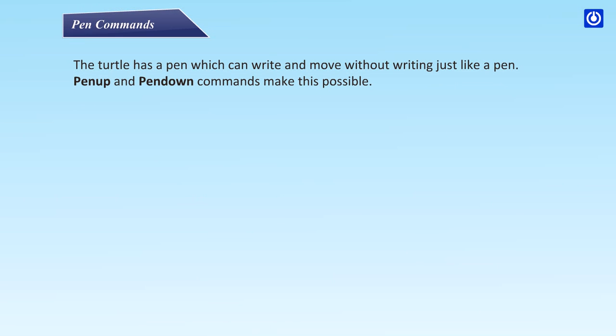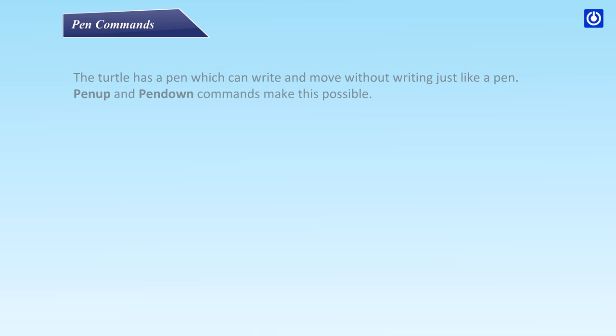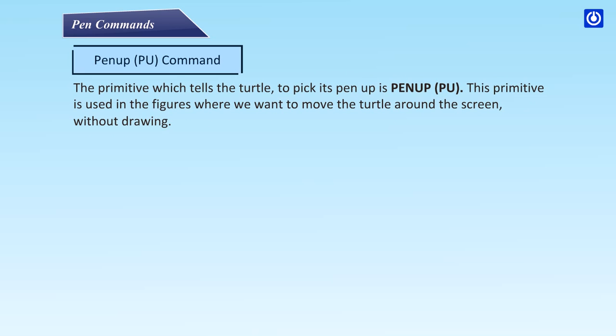The turtle has a pen which can write and also move without writing — just like a real pen. Pen Up (PU) and Pen Down (PD) commands make this possible. The Pen Up primitive tells the turtle to pick its pen up, and is used when we want to move the turtle around the screen without drawing.